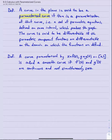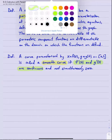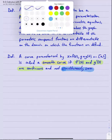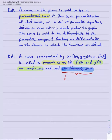Second definition: we'll say a curve parameterized by f of t and g of t on the interval a to b is called a smooth curve if: condition one, f prime of t and g prime of t are continuous, and condition two, those two derivatives are not simultaneously zero — that is, f prime of t and g prime of t are not both zero at the same time.